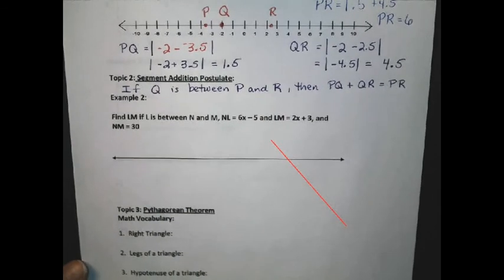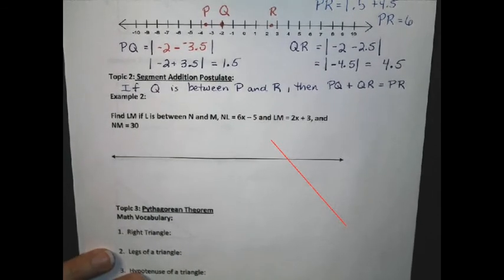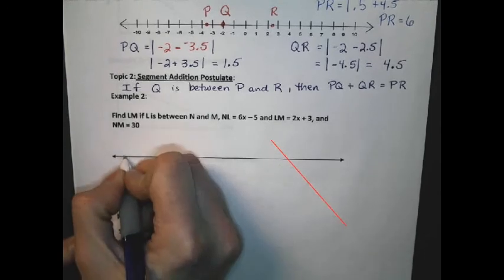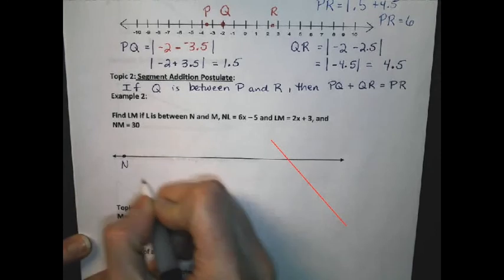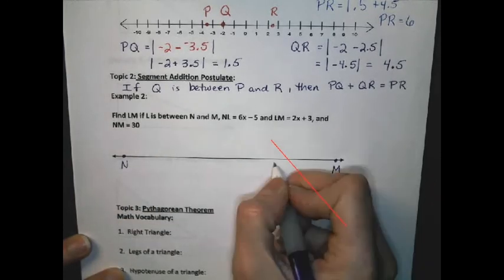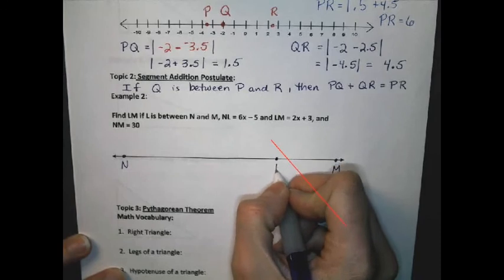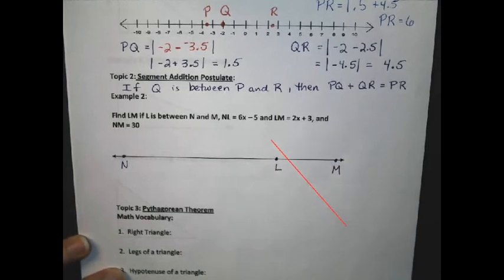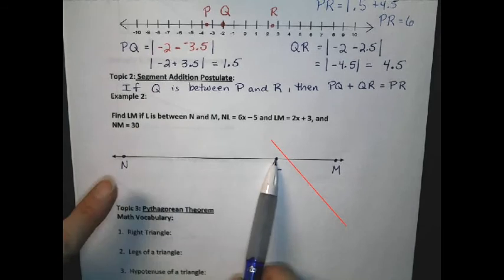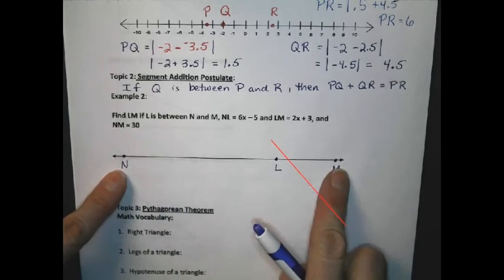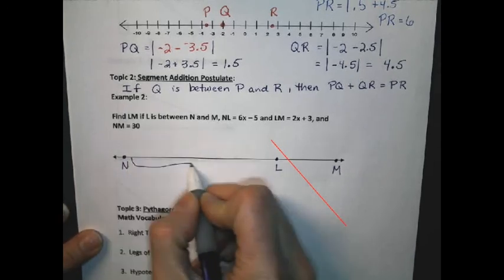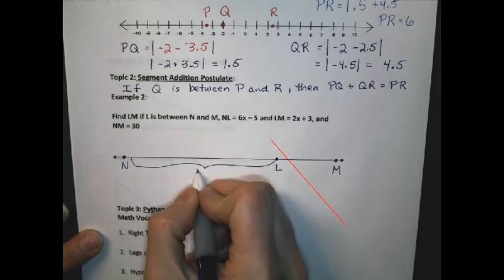In the next example, I'd like you to label this line to have the point N at one end, M towards the other end, and a point L somewhere in between. The directions say find LM if L is between M and N, and NL, which would be this distance, is 6x minus 5.